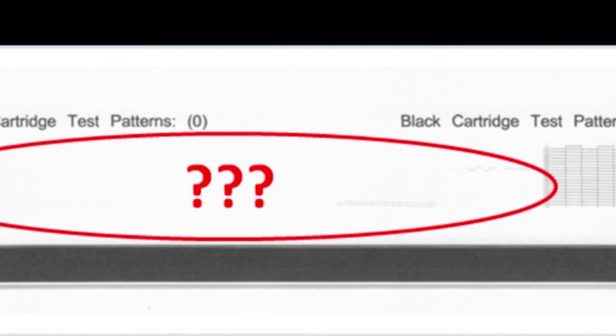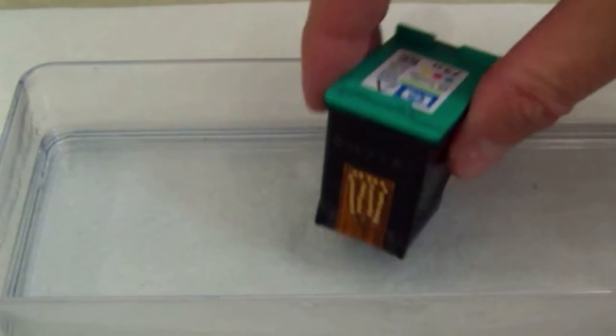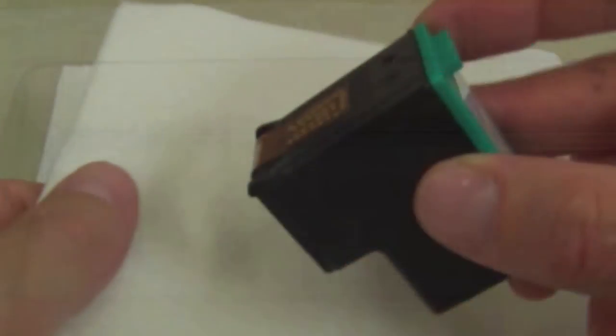If black or color is still missing, then repeat all steps again until ink is visible on the damp towelette or printing has recovered.